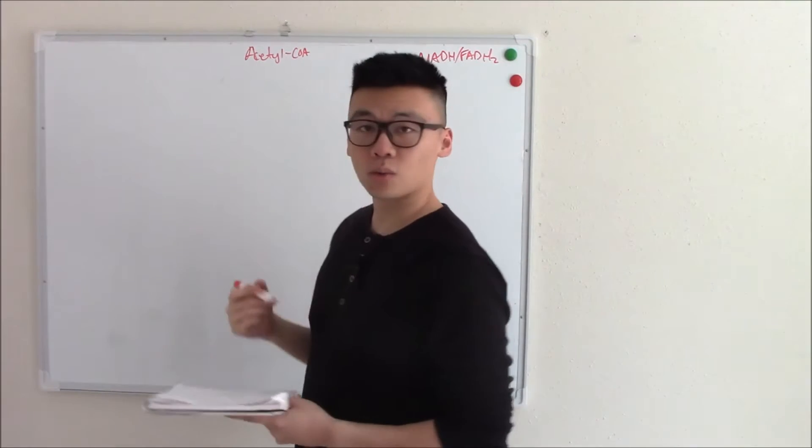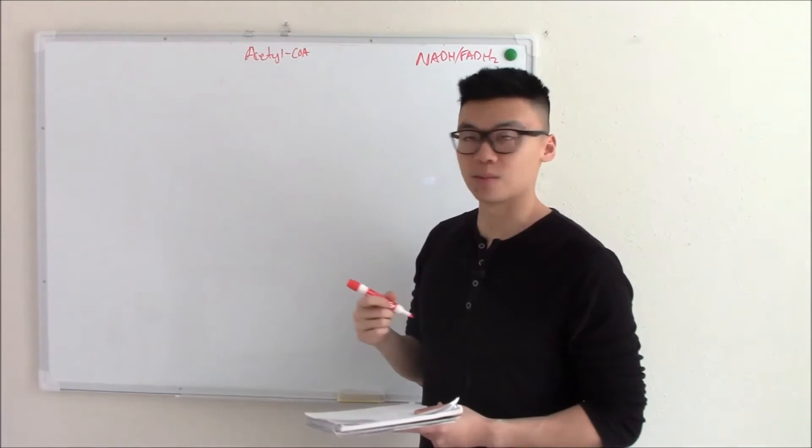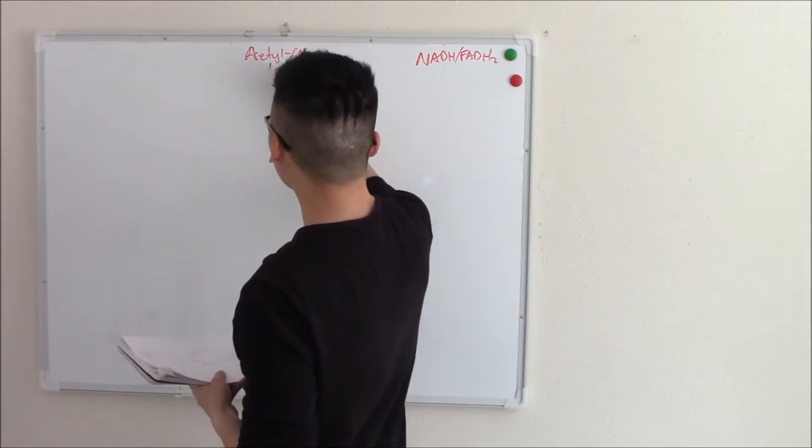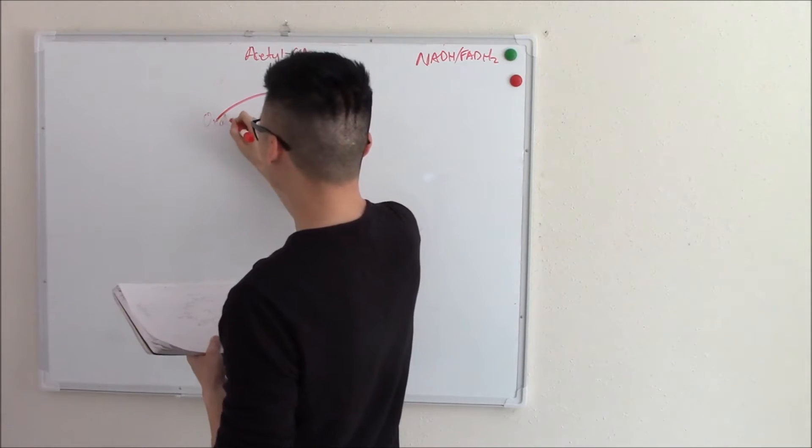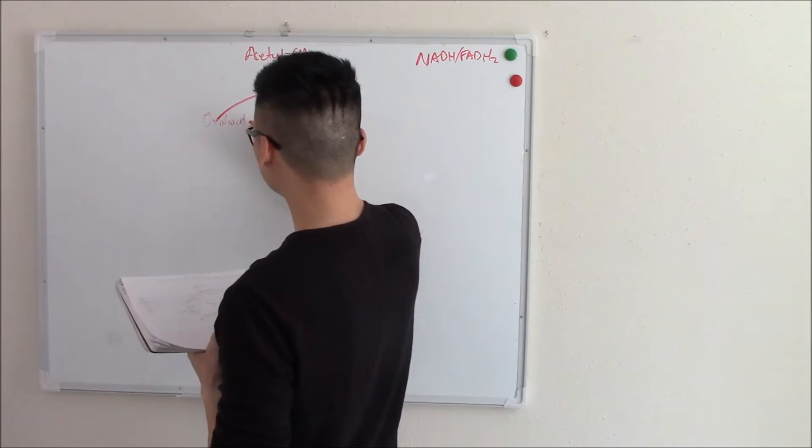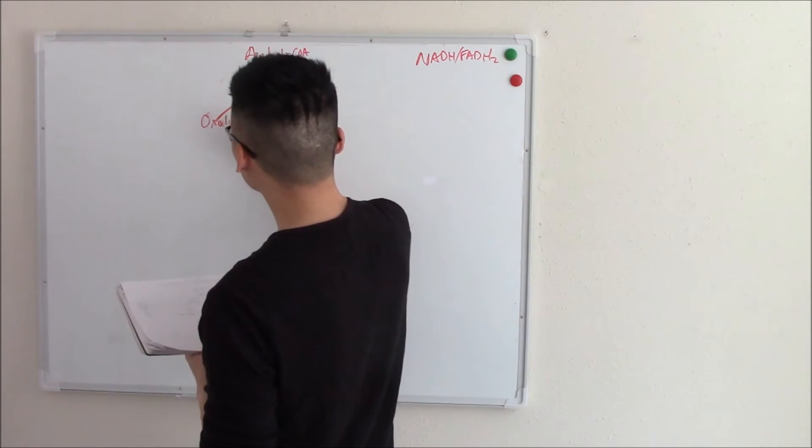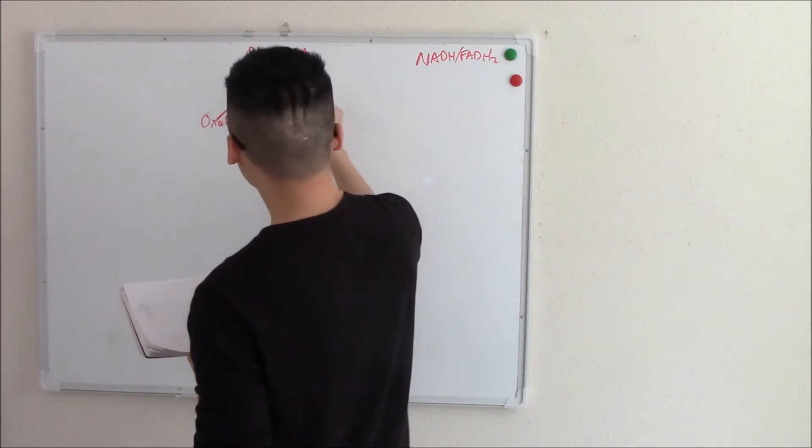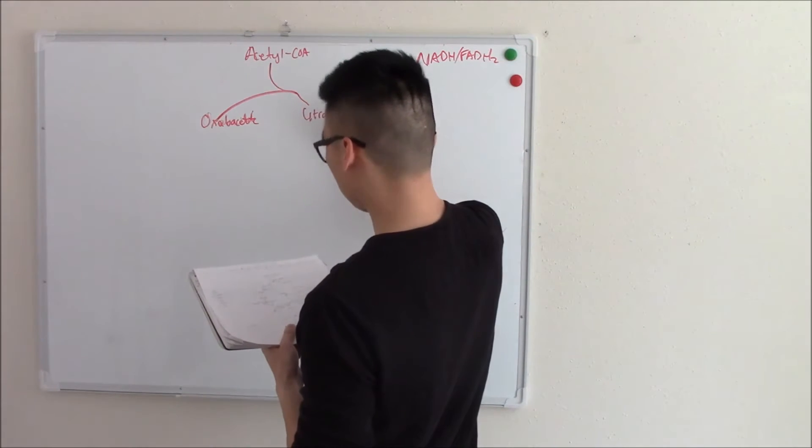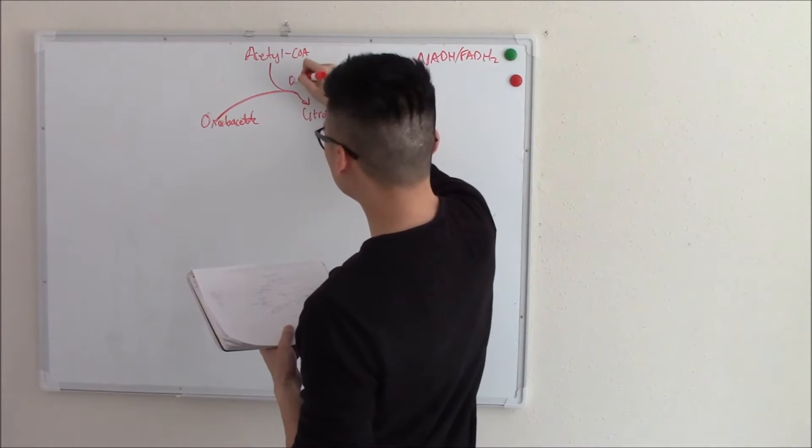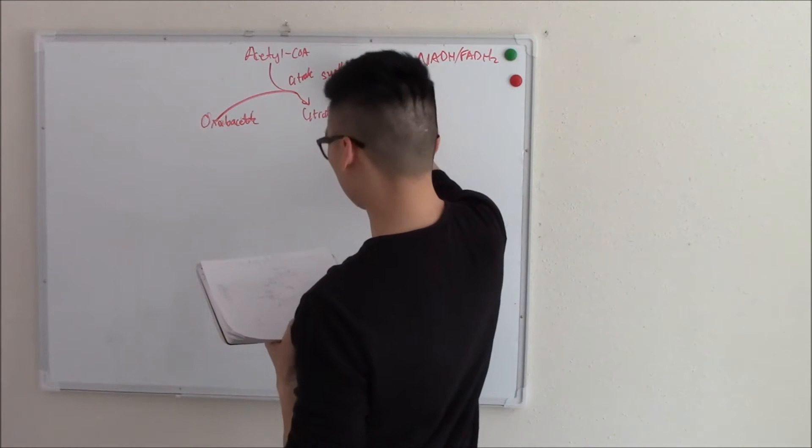Okay so let's start where we left off: acetyl-CoA. That was our last product of glycolysis, remember? So acetyl-CoA combines with oxaloacetate to make citrate, and the enzyme that does that is citrate synthase. The name gives it away.